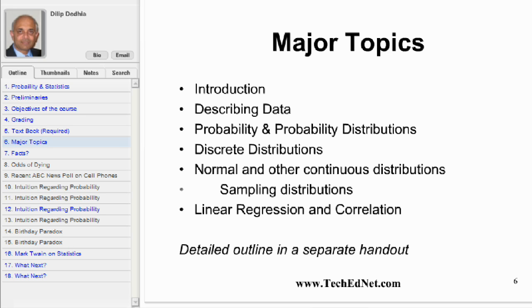We will then learn how to summarize data with numerical measures and what are the appropriate measures. Next, we will learn about the concept of probability. We will explore discrete distributions like binomial and Poisson and their applications. We will then go on to the normal distribution, sampling distribution, and linear regression.